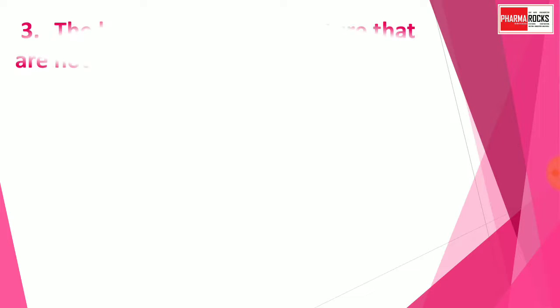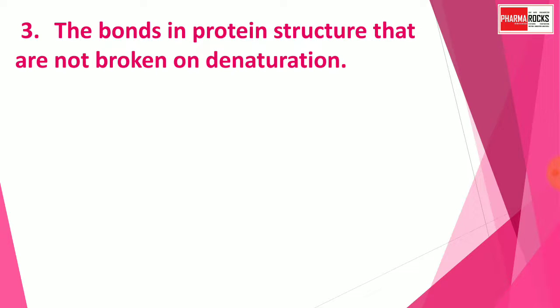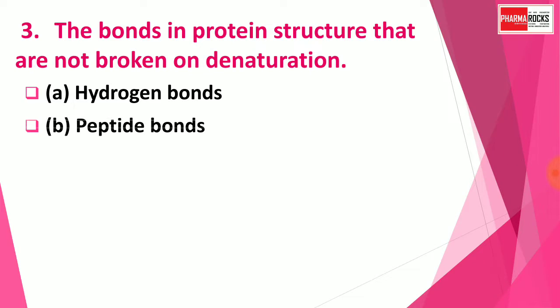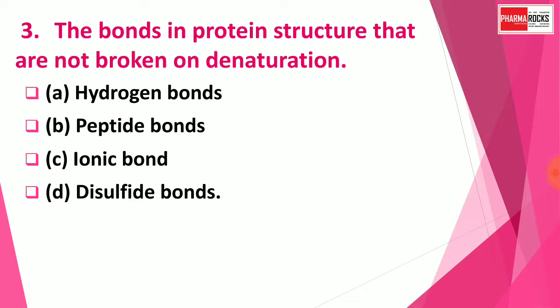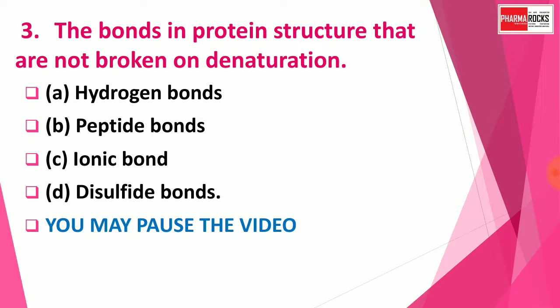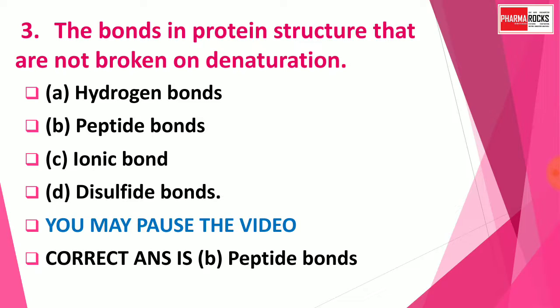Question number 3: The bonds in protein structure that are not broken on denaturation are — Option A: Hydrogen bond, Option B: Peptide bond, Option C: Ionic bond, Option D: Disulfide bonds. You may pause the video. The right answer is Option B: Peptide bonds. Peptide bonds in the protein structure are not broken on denaturation of protein.